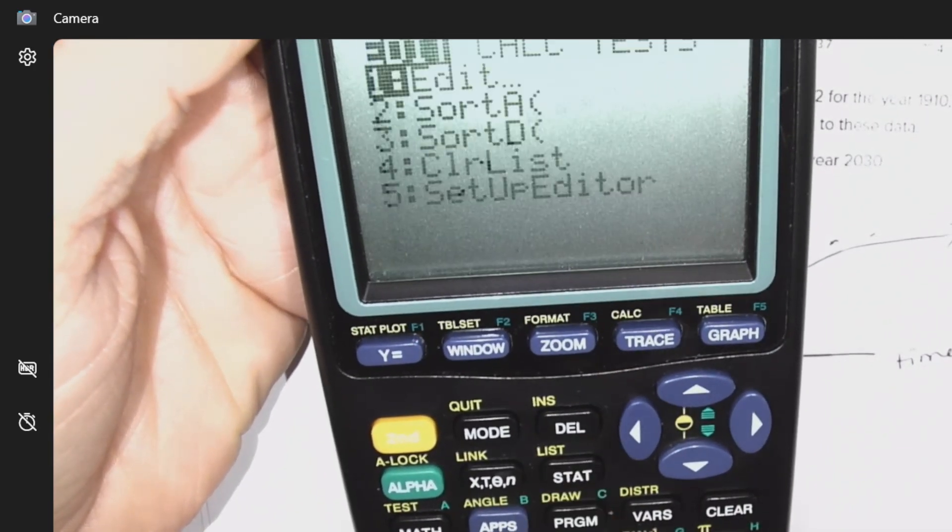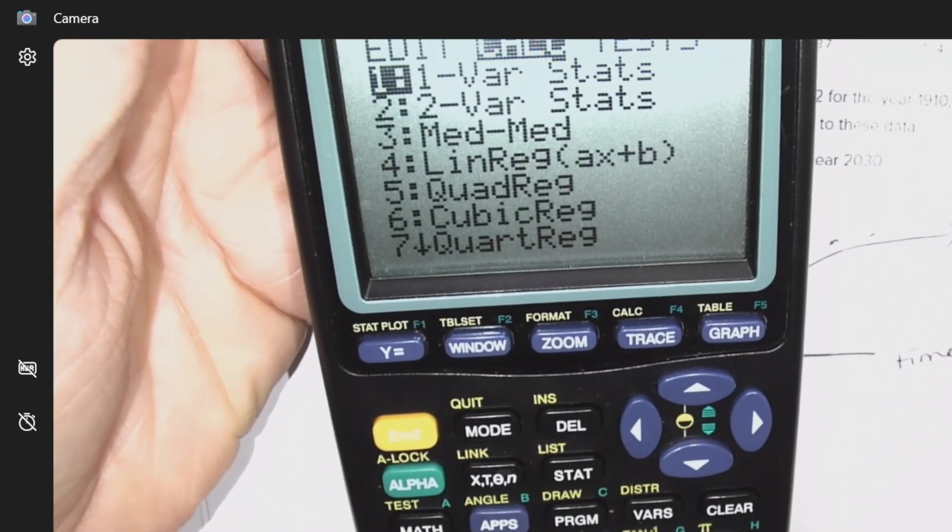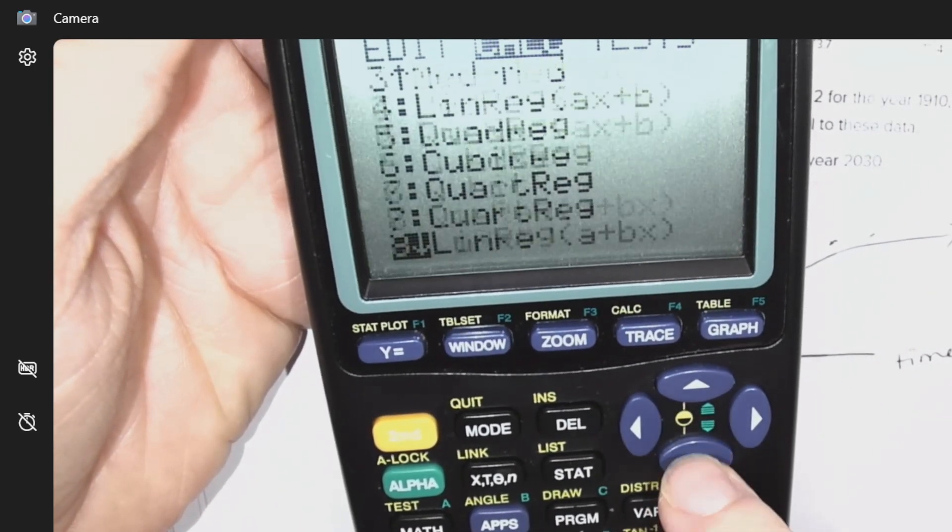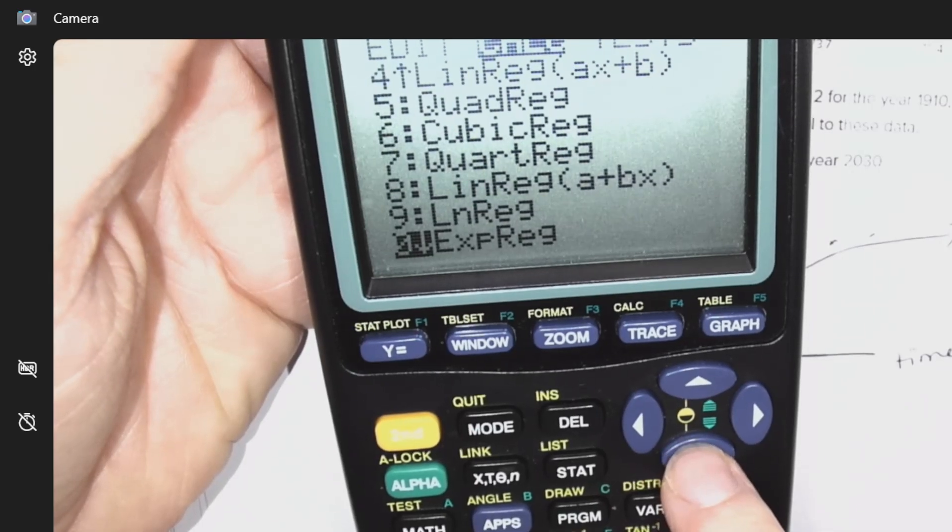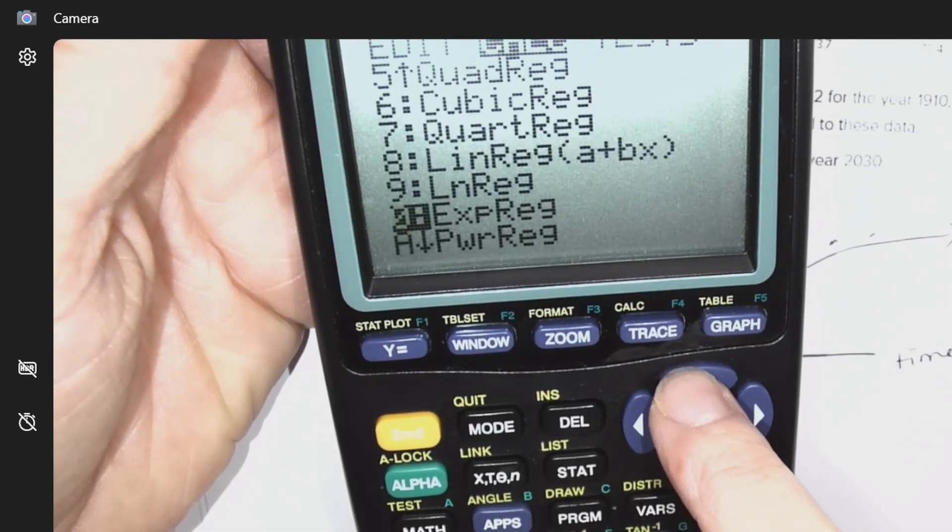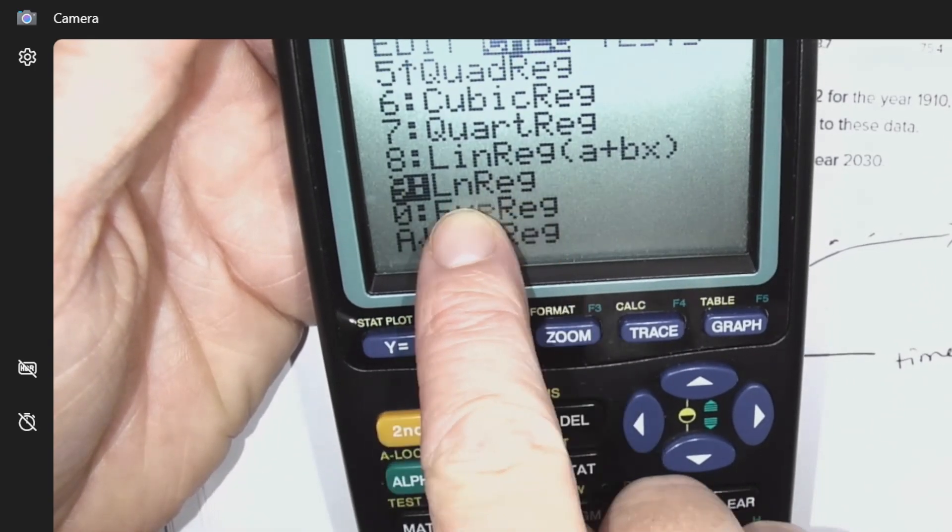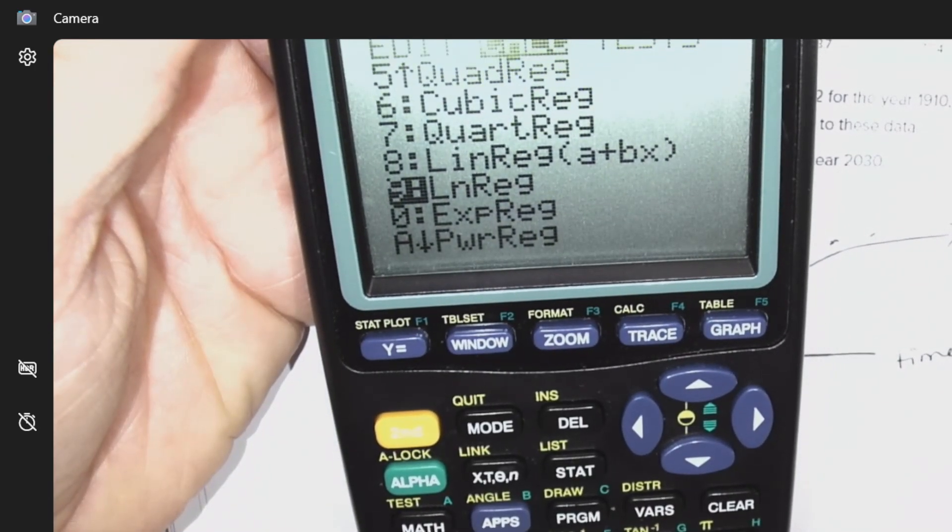Okay, let's go stat calculate. So, this is that log shape. Which option are we picking? We're picking option 9 because it's actually called the natural log option. So, we're picking number 9.